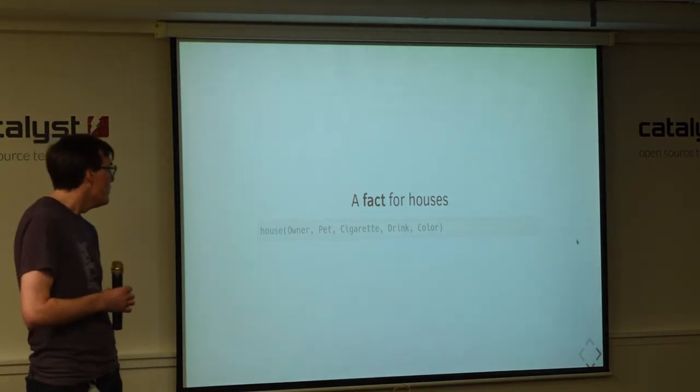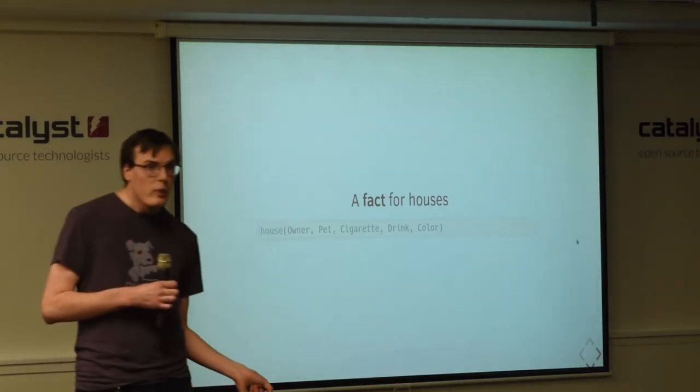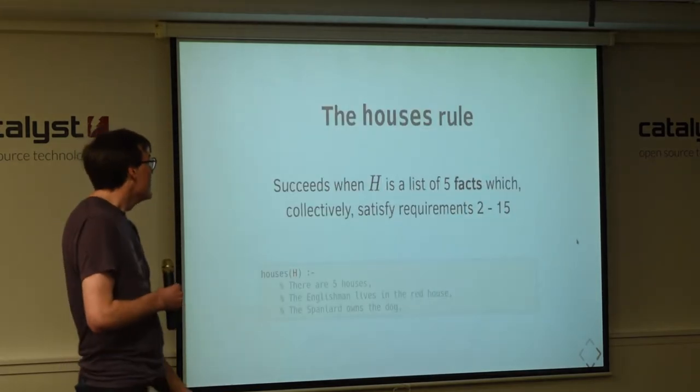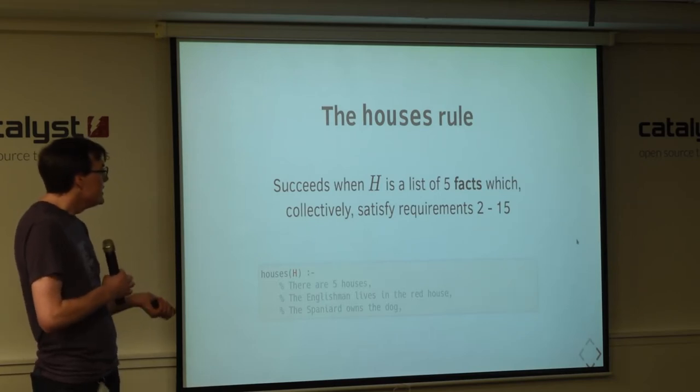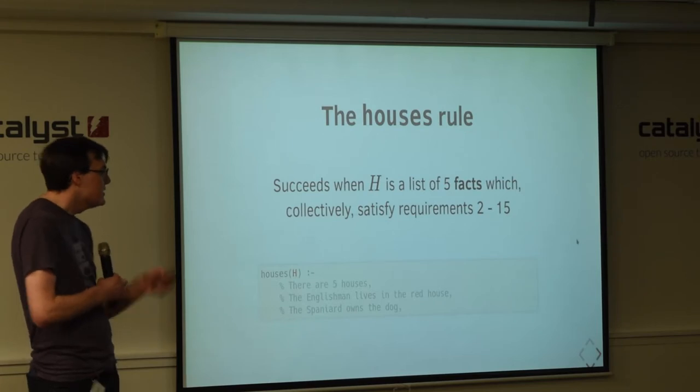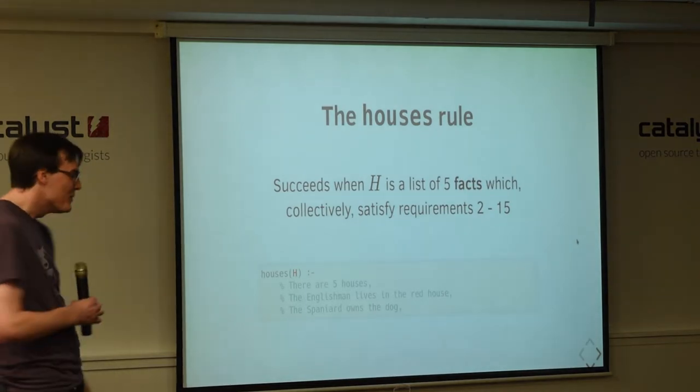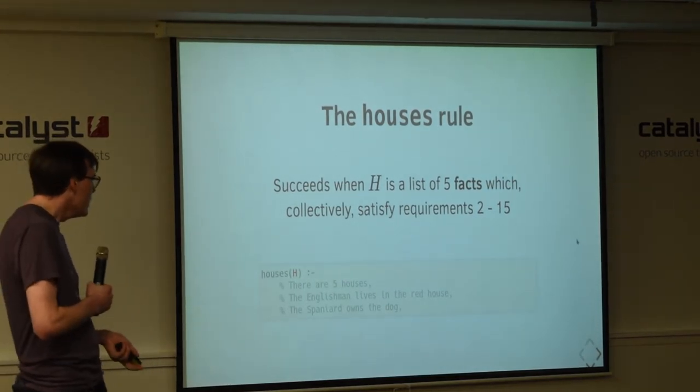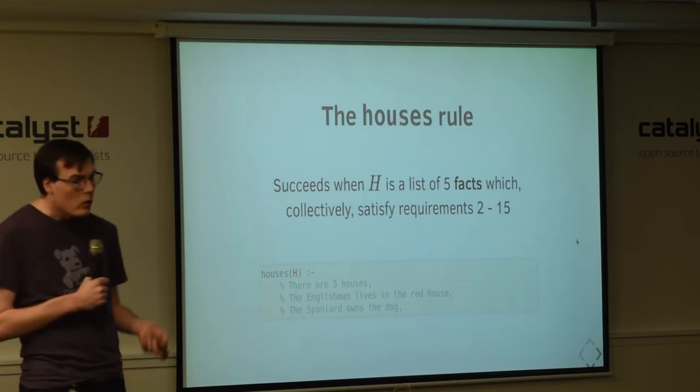And so, we can represent that as a fact. So, we have a house fact, owner, pet, cigarette, drink, and color. And that's just like a really big predicate with five variables. Now, this is where the magic happens. We can define a rule, houses, which succeeds when H is a list of five facts that collectively satisfy requirements two to 15. Trying to explain this in English is really hard. But essentially, what we're asking Prolog for is a value for H, where H is a list of houses that meet all of the requirements. And we're just going to let Prolog figure out how to actually permutate over all of the properties to come up with that list.